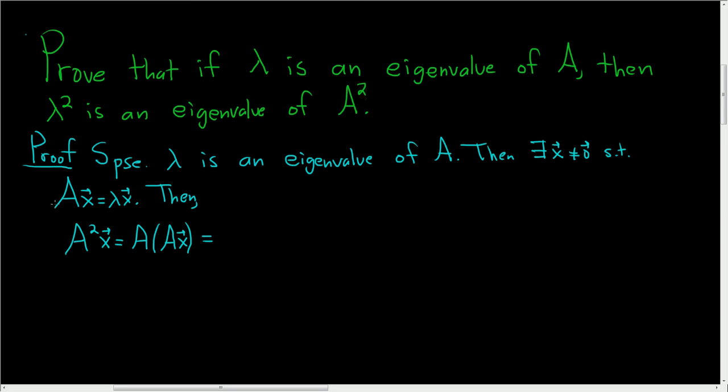And now we know something about A x. It's equal to lambda x. So this is A lambda x. And now we can use associativity once again. Or rather, lambda is a scalar, so it commutes with A. So we can write this as lambda A x.